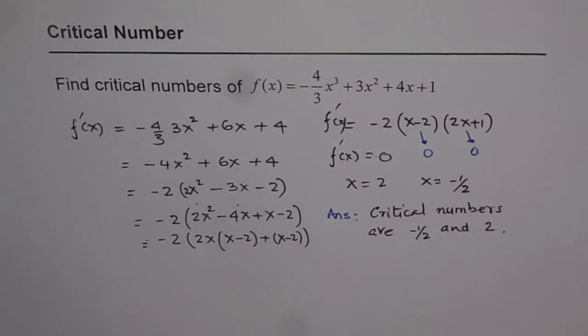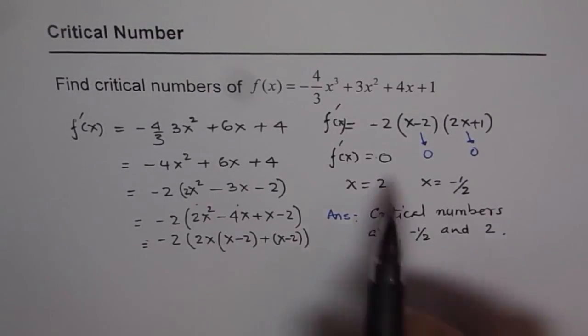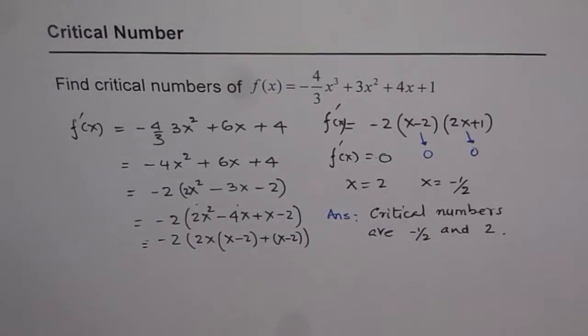These are the values in the domain of the function where we can expect extreme values like local maximum or local minimum. That is how we use these critical numbers.